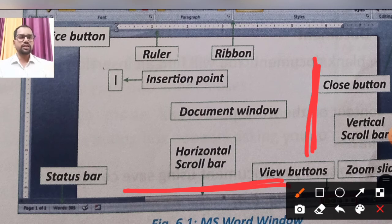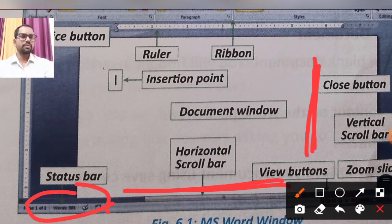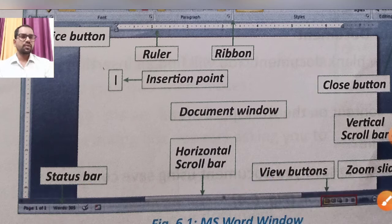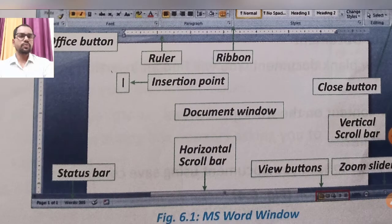The Status Bar at the bottom shows document information. The View button and Zoom slider allow you to change the document view and zoom level.